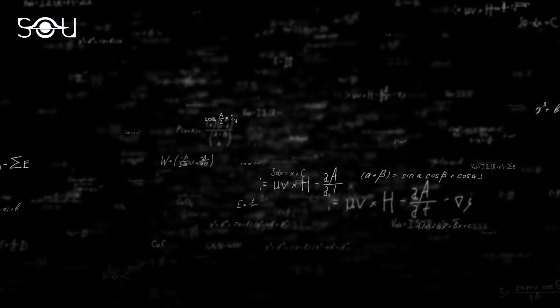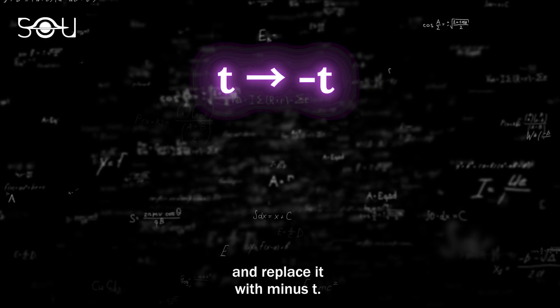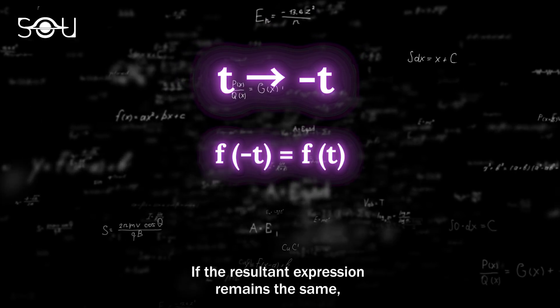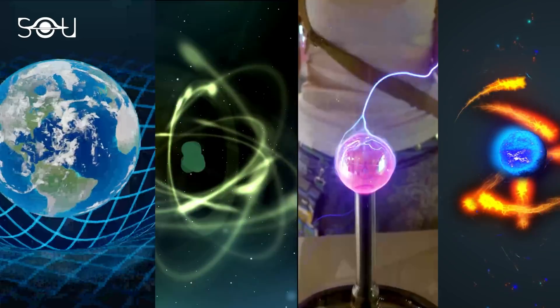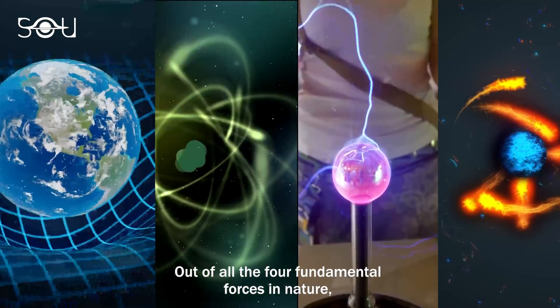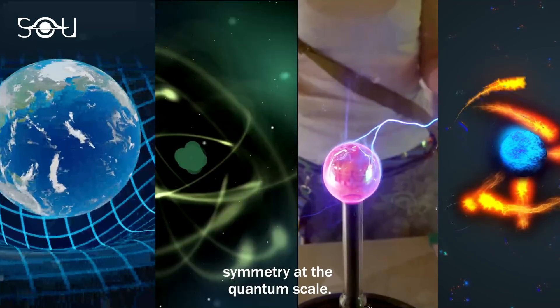It's simple. Just take any equation that contains time t, and replace it with minus t. If the resultant expression remains the same, then the phenomenon won't change if you reverse time. Out of all the four fundamental forces in nature, three are known to follow this beautiful time symmetry at the quantum scale.